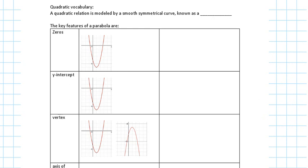How can I identify these features? Because they tell me a lot about my equation. A quadratic relation is modeled by a smooth, symmetrical curve known as a parabola. These are adjectives we use to describe the parabola — it has to be symmetrical. What does the word symmetrical mean? Both sides. So if you cut it in half, it's going to be the same on both sides.